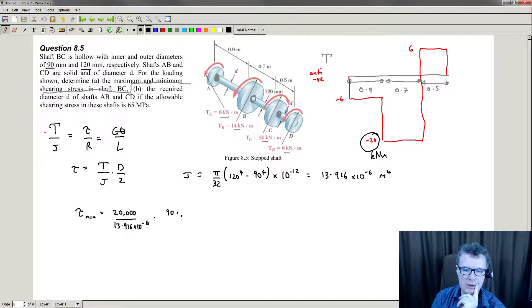The minimum shear stress will be the inner part. So that would be 90 millimeters. I'll divide that by 2 to make it into radius. I need to find that.